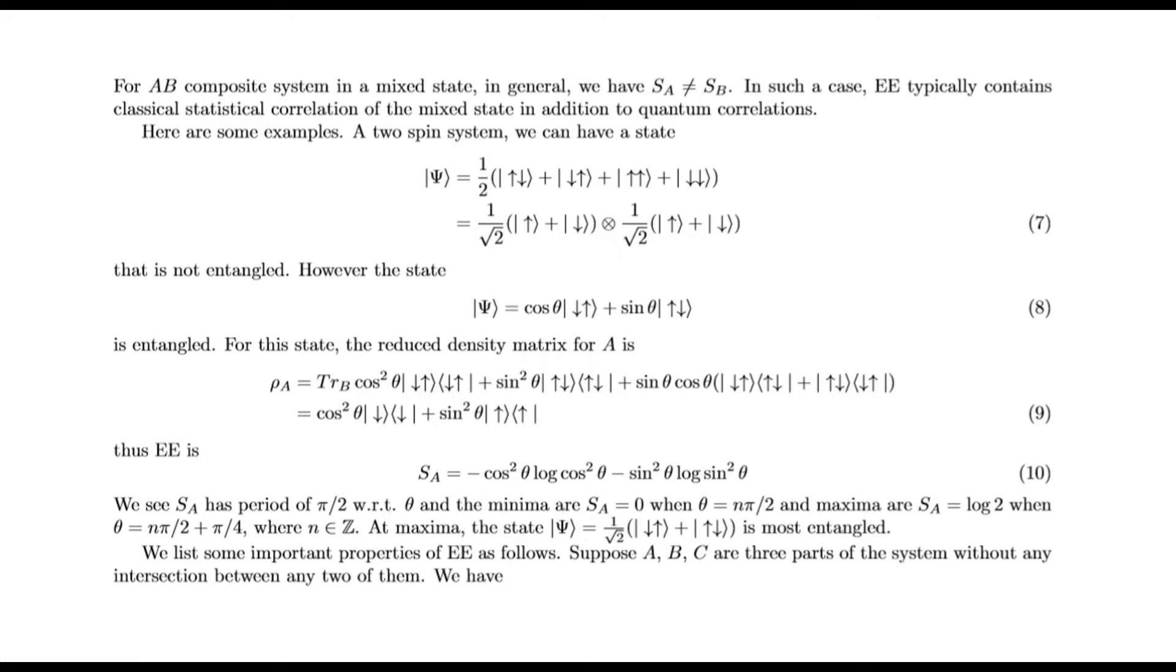For AB composite system in a mixed state, in general we have S_A ≠ S_B. In such a case, entanglement entropy typically contains classical statistical correlation of the mixed state in addition to quantum correlations.